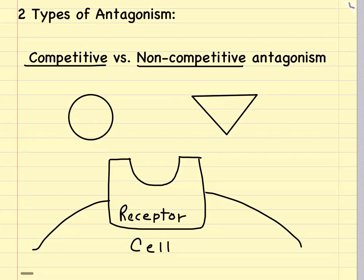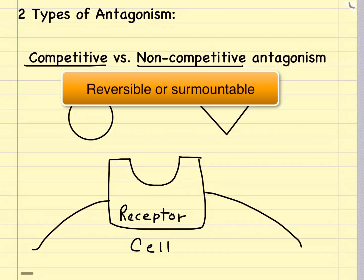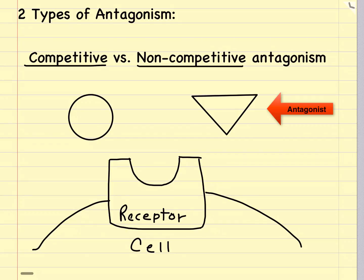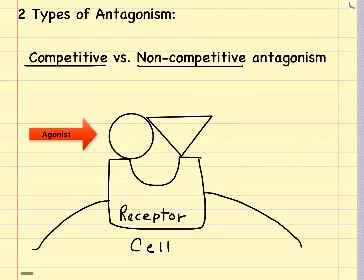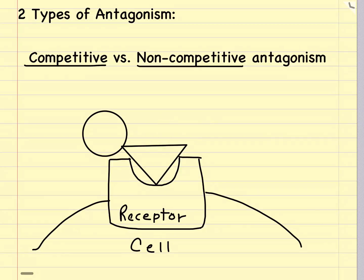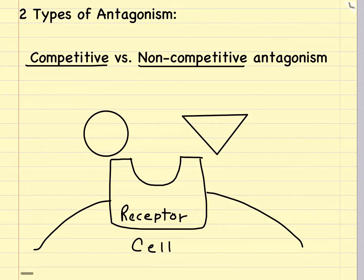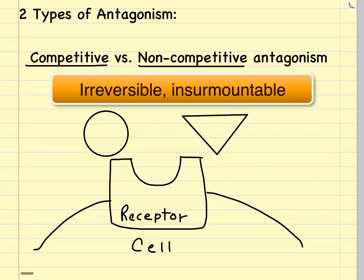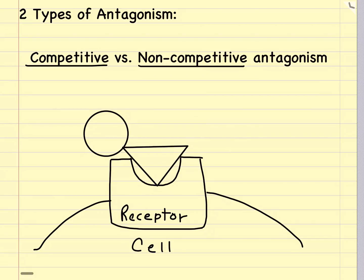Now let's look at two types of drug antagonism: competitive versus non-competitive antagonism. Competitive antagonism, also called reversible or surmountable antagonism, is based on the fact that the drug antagonist vies with a drug agonist or a neurotransmitter for the receptor to which both have equal affinity. In non-competitive antagonism, also called irreversible or insurmountable antagonism, the antagonist permanently combines with the receptor — or for a prolonged period of time — in such a way as to block or change it so that nothing else can bind.